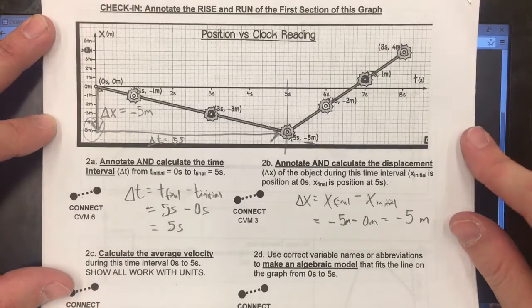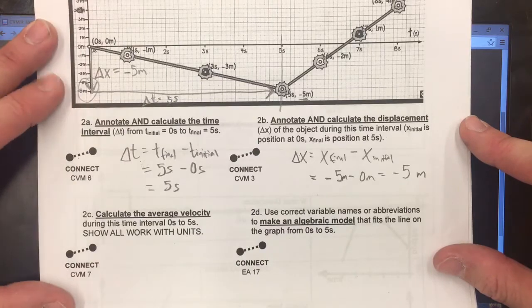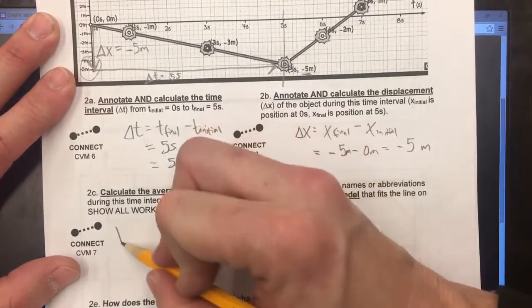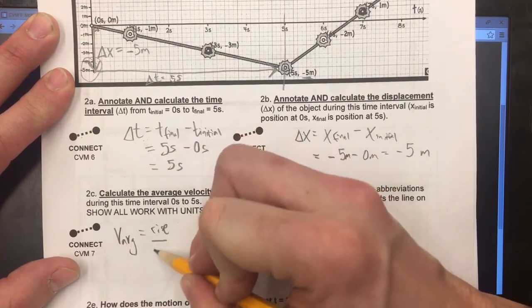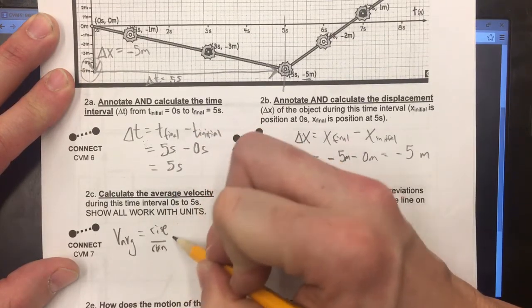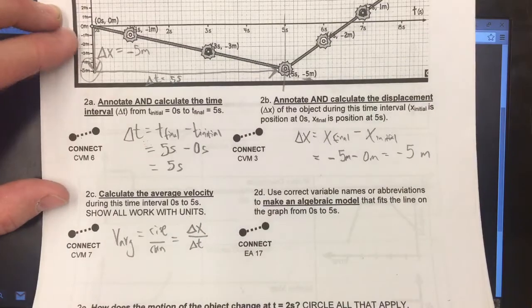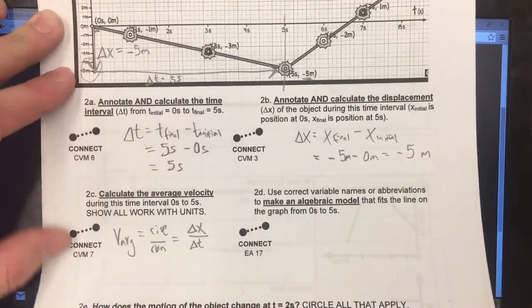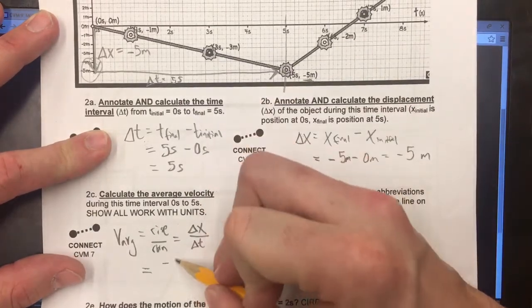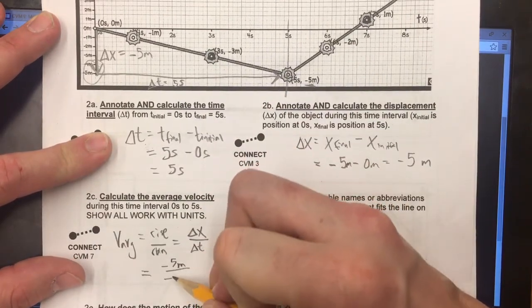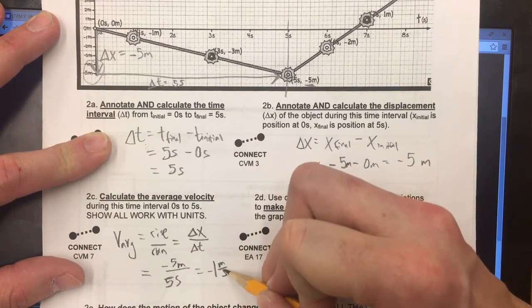Not so complicated there, but down here we need to use these two numbers to calculate an average velocity, and we remember velocity, the average change, is the rise over the run, which in this case is equal to the change in X over the change in T. That is, it's the change in position over the change in clock reading. Those are the two numbers that we calculated here, so we're just going to plug them in. Negative five meters divided by five seconds equals negative one meters per second.